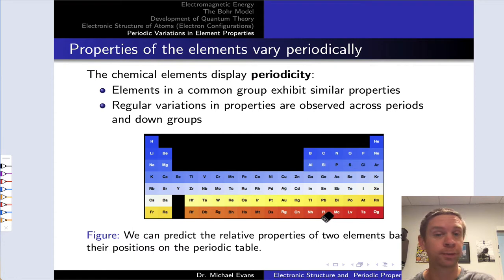Elements in the same group, the same column of the periodic table, have a number of similar properties, particularly related to how they bond and what types of compounds they form. We also observe regular variations in properties across periods, from left to right. The same is true moving down a group. We may observe a consistent decrease or increase in a property as we move down a group.